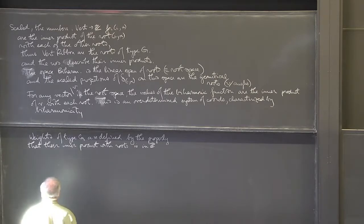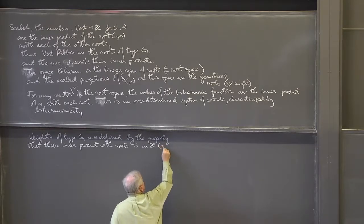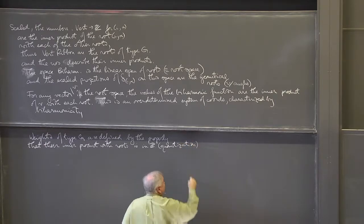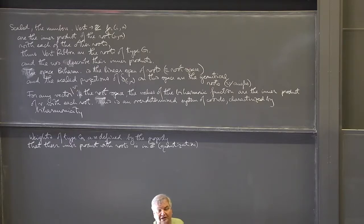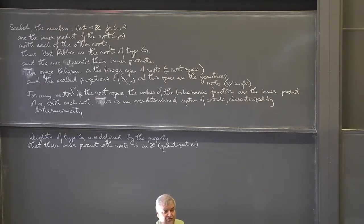This is maybe a quantization. Weights were the eigenvalues of eigenvectors in a representation — vectors which encoded the eigenvalue. Roots were the eigenvalues in the adjoint representation, characterizing for instance the elements E_ij for matrices.